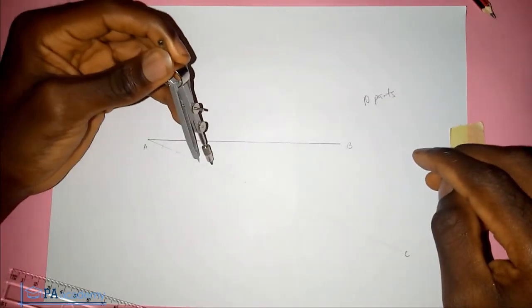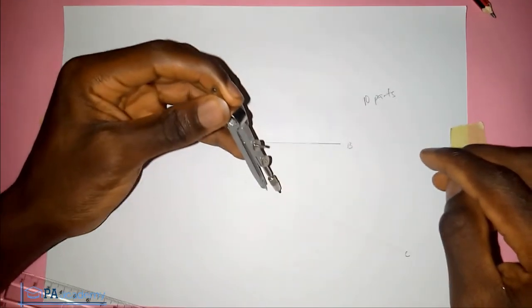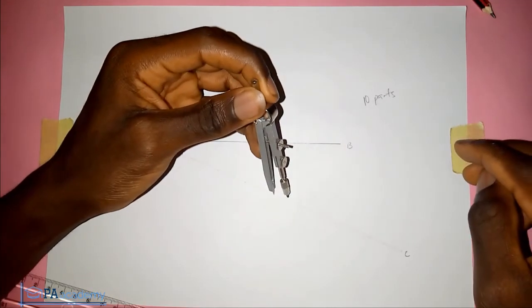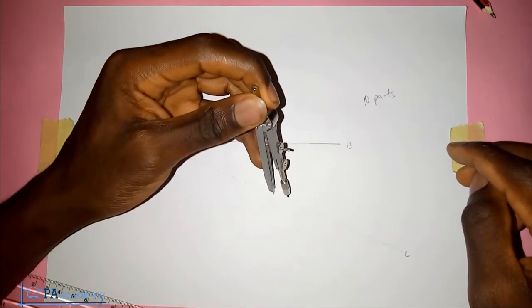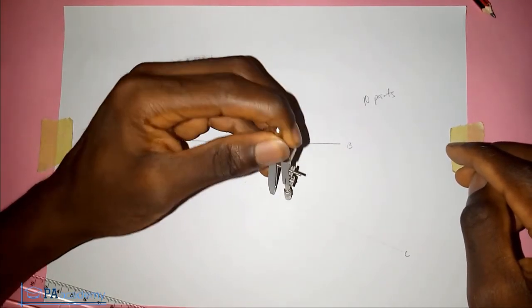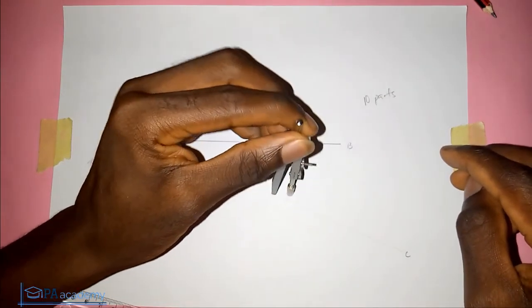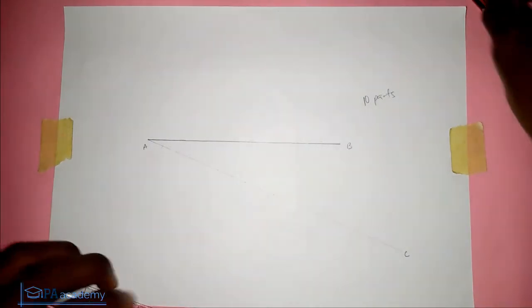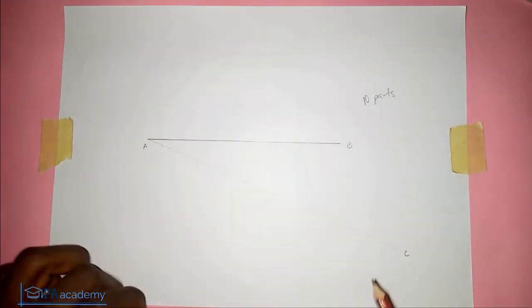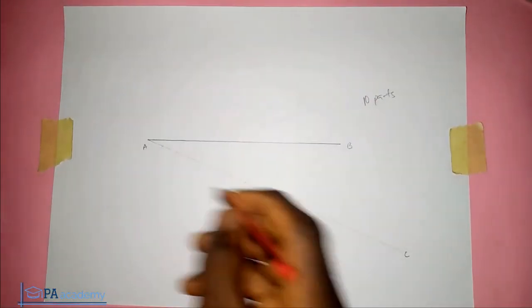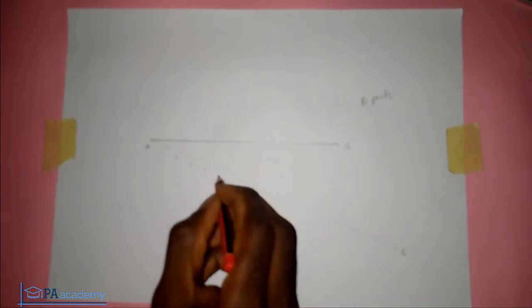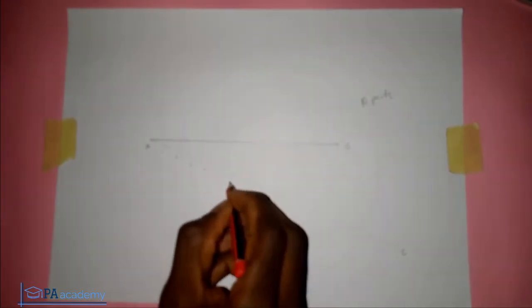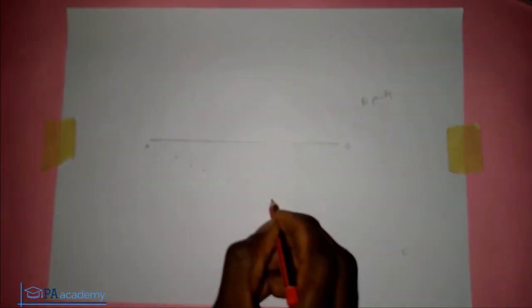So this is 1, 2, 3, 4, 5, 6, 7, 8, 9 — one more — making 10 equal divisions marked along line AC using the compass.